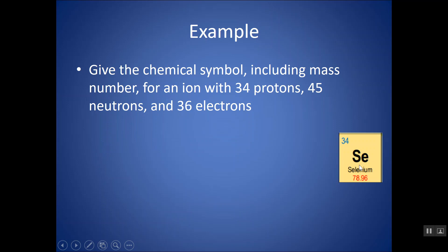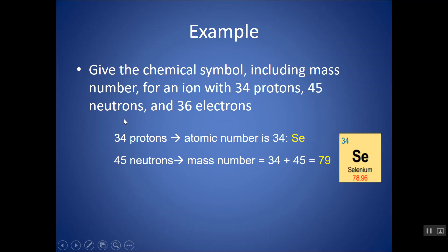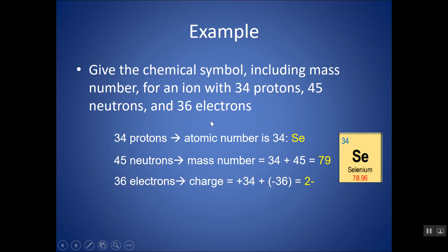34 protons identifies the element — that's selenium. The mass number is found by adding protons and neutrons: 34 plus 45 gives 79. Remember, I don't look up the mass number; I just add protons and neutrons. There are 36 electrons — if this were a neutral atom, there would be 34 electrons, so it has gained 2, giving a 2 minus charge. There are 2 more electrons than protons. When writing the symbol, Se goes in the middle, 79 in the top left for the mass number, optionally 34 in the bottom left for the atomic number, and 2 minus in the top right.